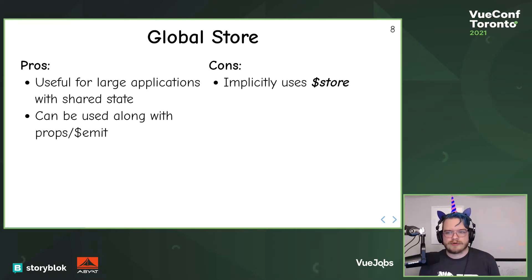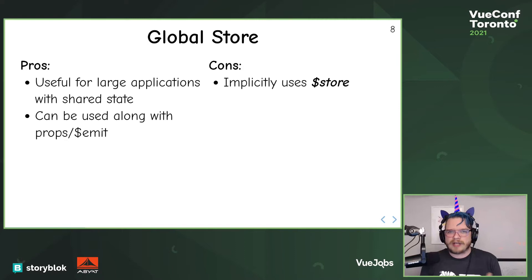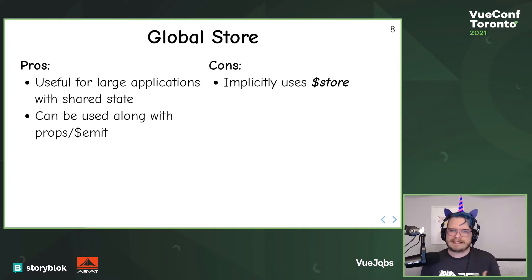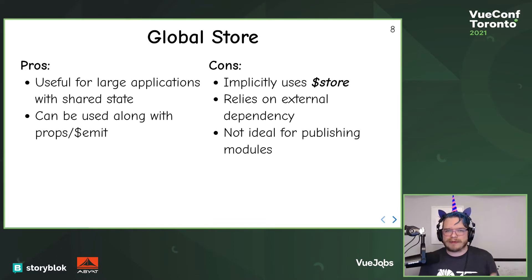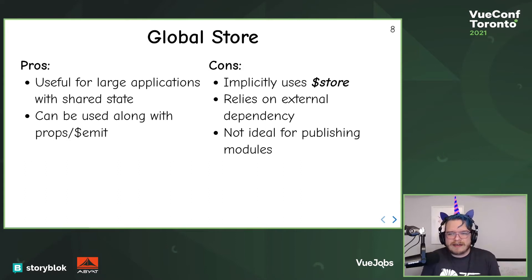A downside to Vuex is that it implicitly uses $store. If you're building a design library, you don't know that you'll have $store, or whether you'll have Pinia or Vuex. It also relies on an external dependency — another library, more JavaScript. And it's not ideal for publishing modules. If you have a design system and you're making components you want to release, relying on $store won't work because it'll just break.